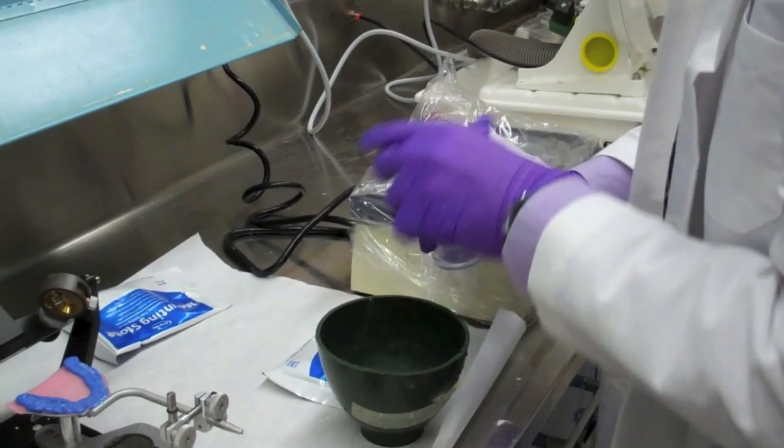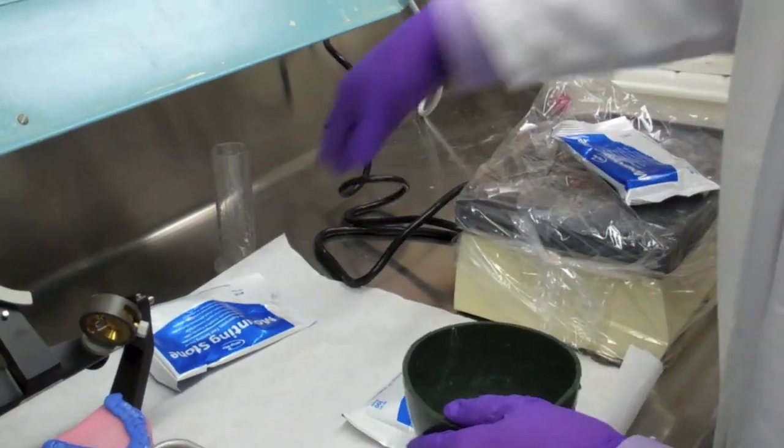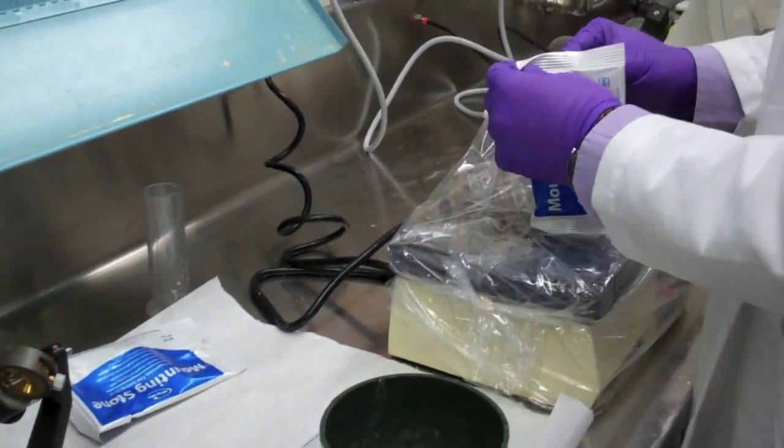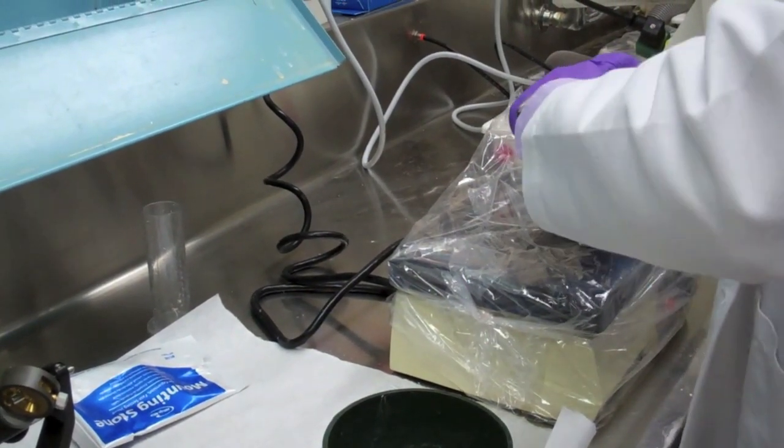First place 26 cc's of water into the rubber bowl. Directly following that, add the entire package of mounting stone. Note that each manufacturer is different and the water powder ratio will vary.